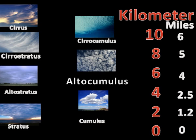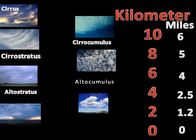Cirrocumulus clouds are one of the three main types of high-altitude clouds, which also include cirrus and cirrostratus. They usually occur at an altitude of 5 to 12 kilometers. Like other cirrus clouds, cirrocumulus signify upward air currents, but unlike other cirrus clouds, they include a small amount of liquid water droplets in a supercooled state. Ice crystals are the predominant component and typically cause the supercooled water droplets to rapidly freeze, transforming the cirrocumulus into cirrostratus.